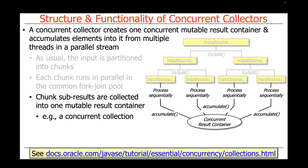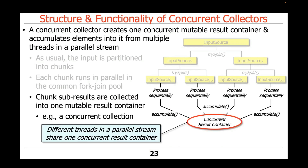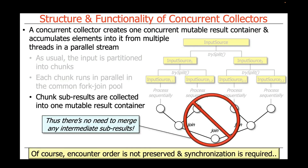Here's where things differ. The subresults from the processes taking place in the common fork-join pool are collected into a single mutable result container — most commonly one of the concurrent collections that comes out of the box, like a ConcurrentHashMap, a key view, or a key set view, which is basically a concurrent hash set. Different threads in a parallel stream share one concurrent result container, and therefore as N gets larger, that's a win.